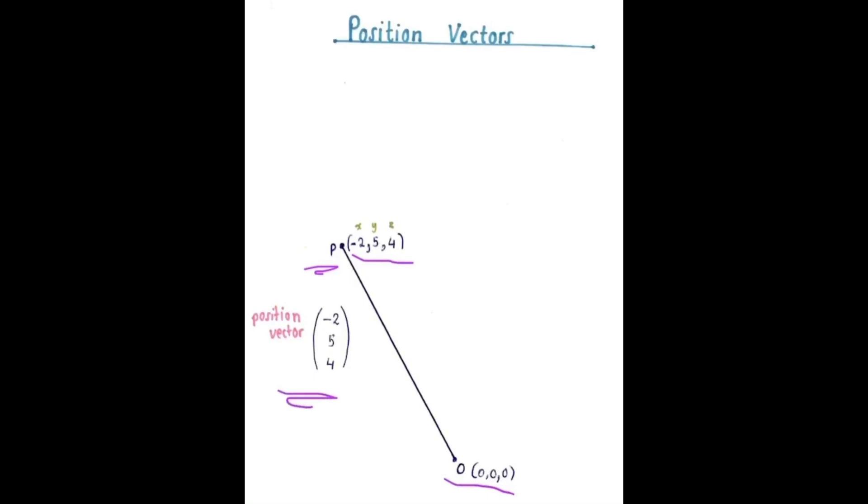This is called a position vector. A position vector is a vector to get you to a point in space from the origin. It gives you the directions to get the point.